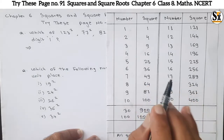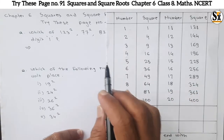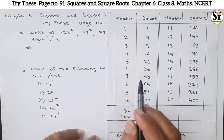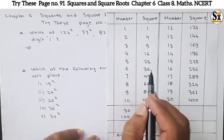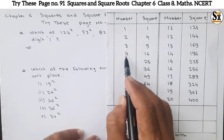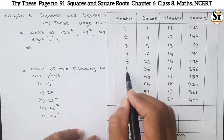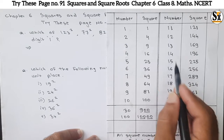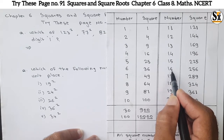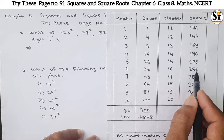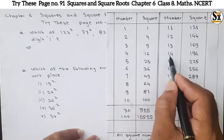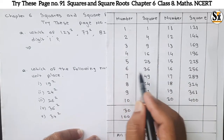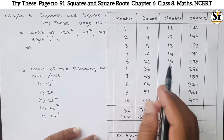One more rule: if the unit place of a number is 4 or 6 — for example 4, 14, 6, 16 — then the unit place of the square of that number is always 6. See: 6²=36, 16²=256 (unit place 6), 14²=196 (unit place 6), 4²=16 (unit place 6). These are the rules.